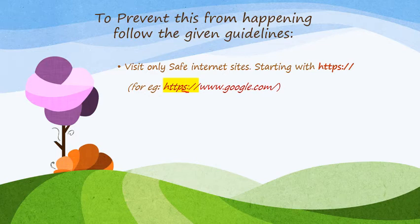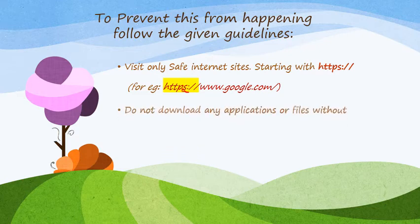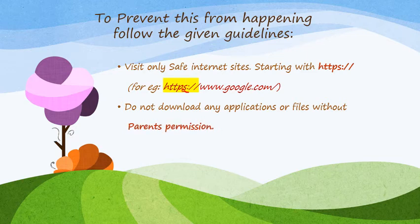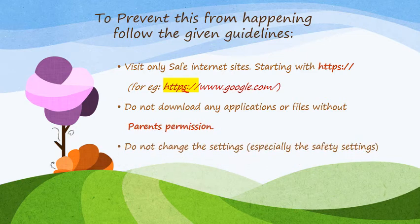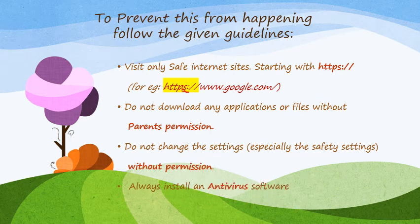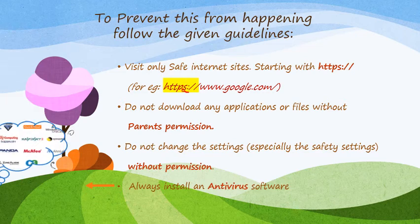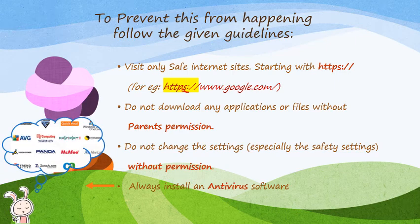Always look for HTTPS when you are downloading something. Do not download any application or file without your parents' permission. Do not change the settings, especially the safety settings, without permission. Always install a good antivirus. Some antiviruses include Kaspersky, McAfee, and Panda. You can use any one of them, but keep updating them at regular intervals.